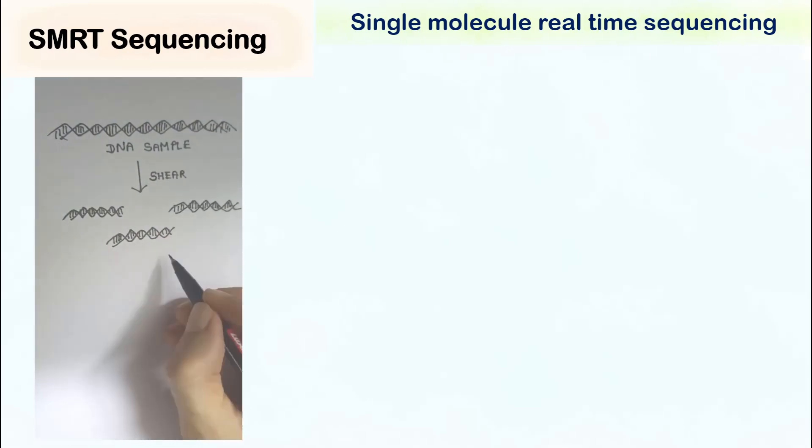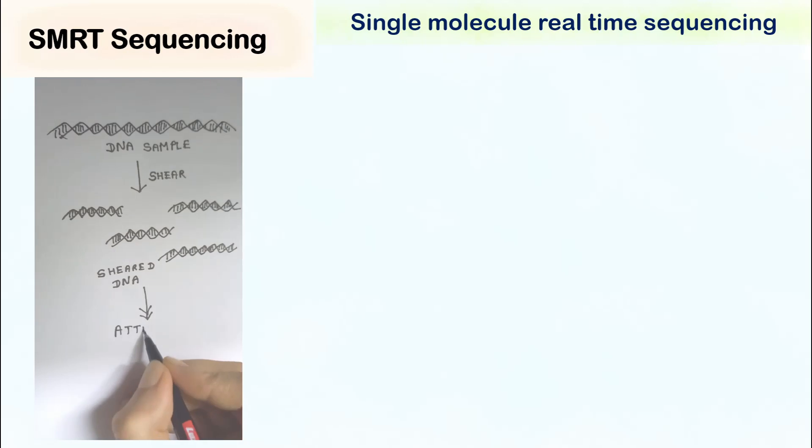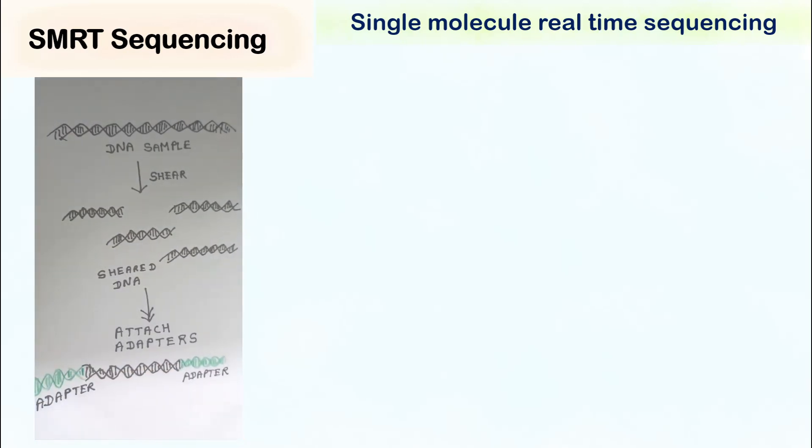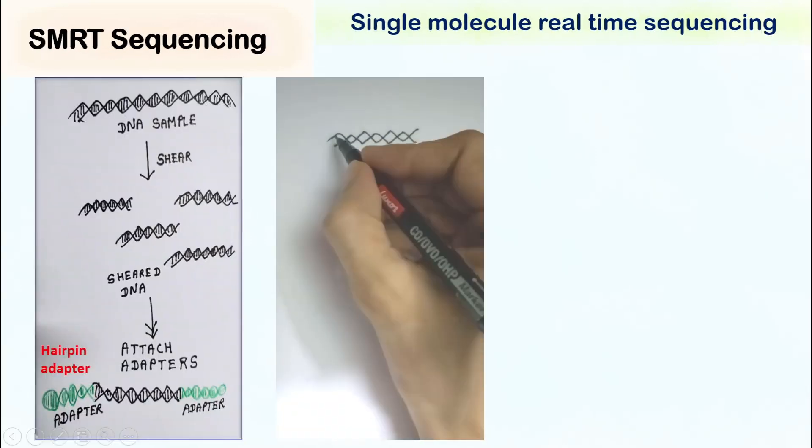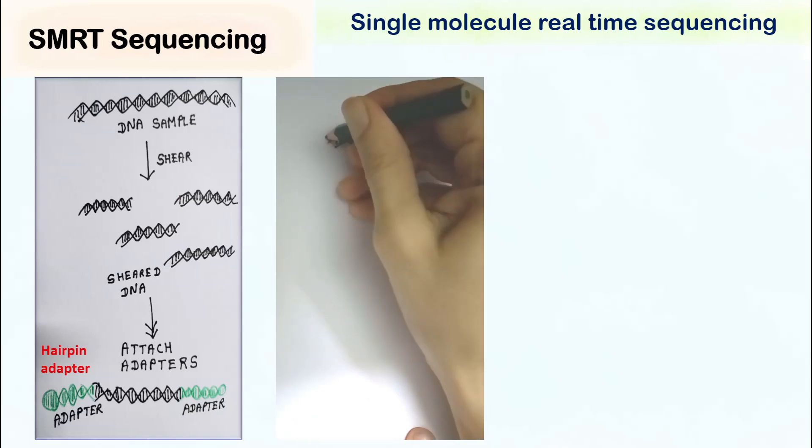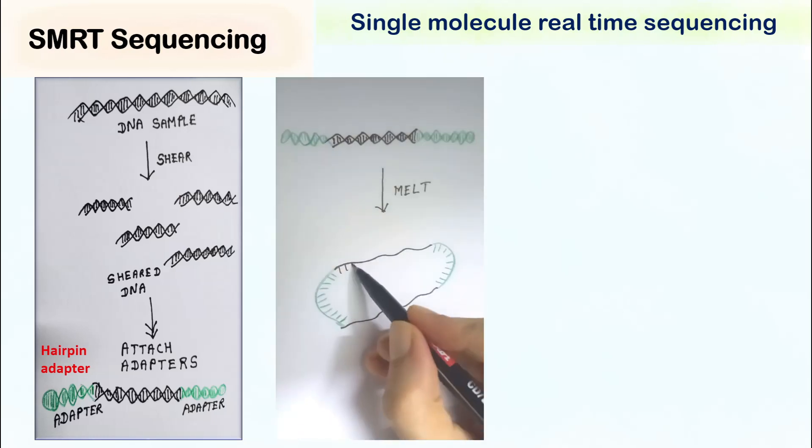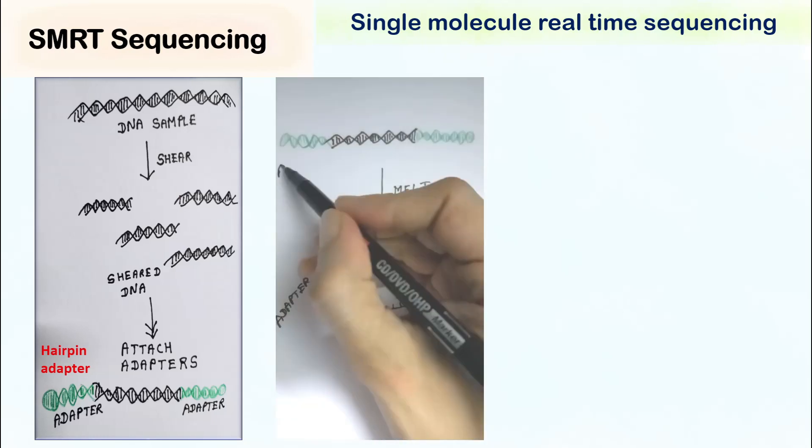The DNA is first sheared and attached with hairpin adapter. Since the adapter has a hairpin structure, the DNA gets converted into single-stranded closed circular DNA upon melting.